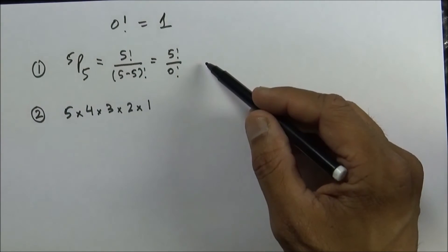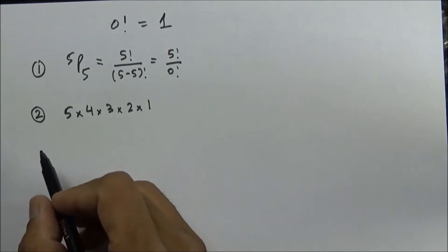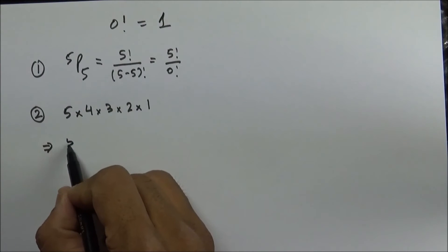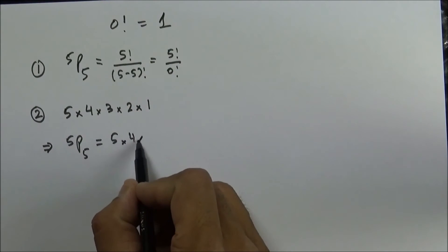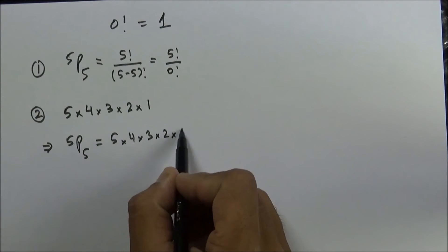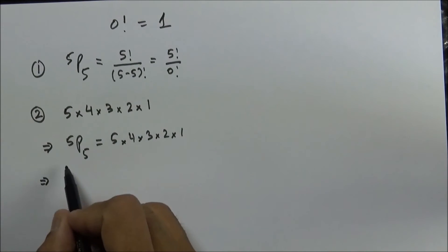The result in both cases will be equal, so we can easily put 5P5 equals 5 into 4 into 3 into 2 into 1, and by expanding 5 factorial upon 0 factorial.